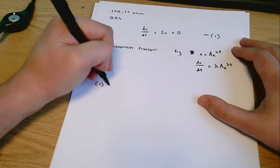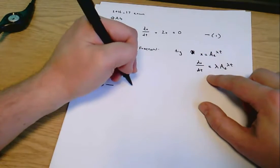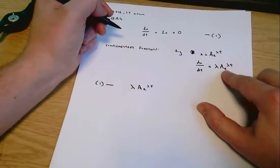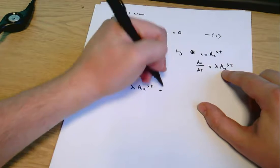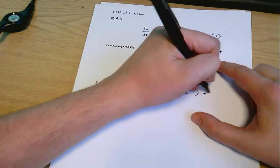And so this equation here that we started with, we can substitute in x and dx by dt and we'll get lambda a e to the lambda t plus 2 times a e to the lambda t equals zero.